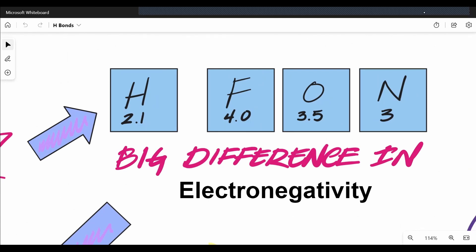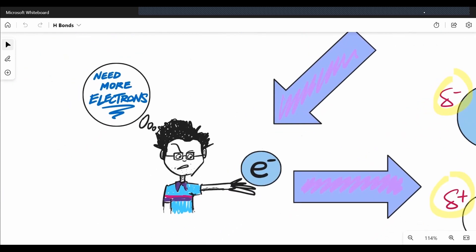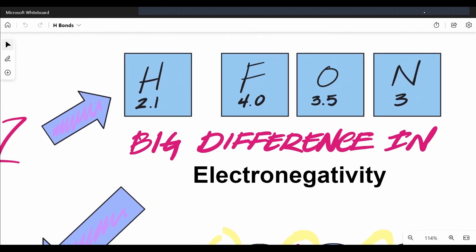Oh, you don't remember what electronegativity is? No problem. We can take care of that. If you look at this little weird character over here, you can see that he really wants more electrons. He's reaching out for them. He's greedy for electrons. Well, that's my analogy for what electronegativity is. So now we can reframe this and say that F, O, and N, phone, these elements are much more greedy for electrons than hydrogen is.